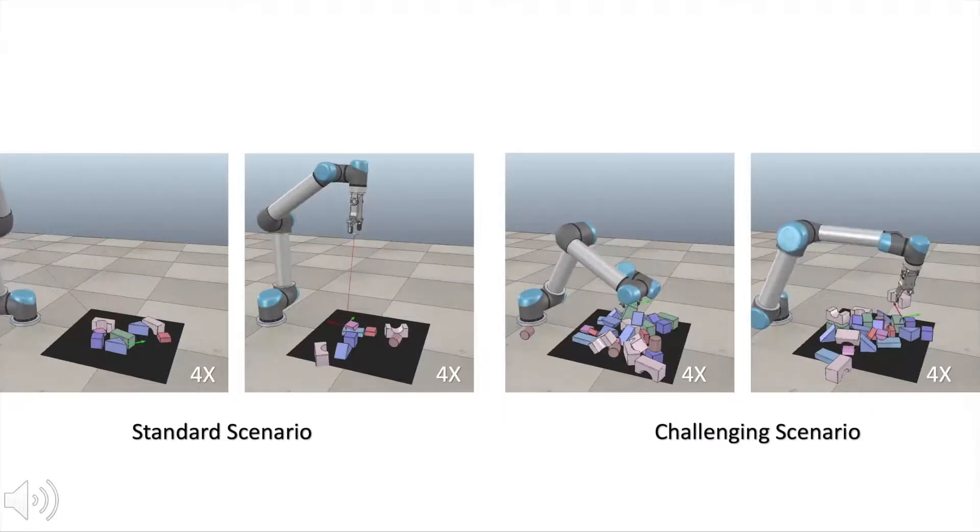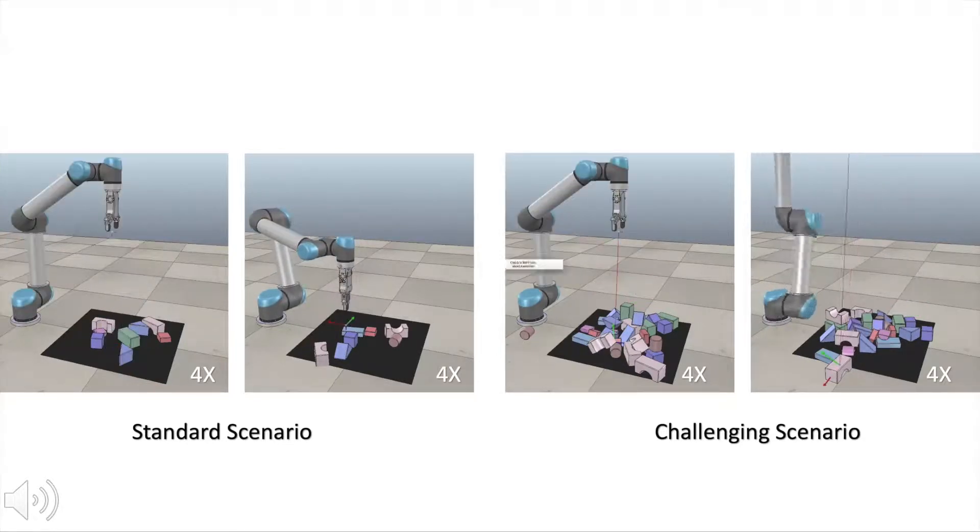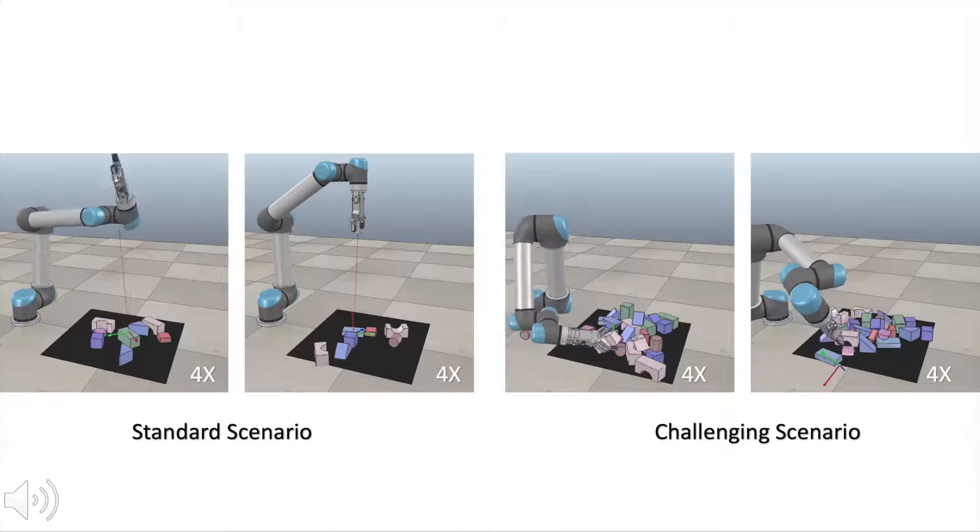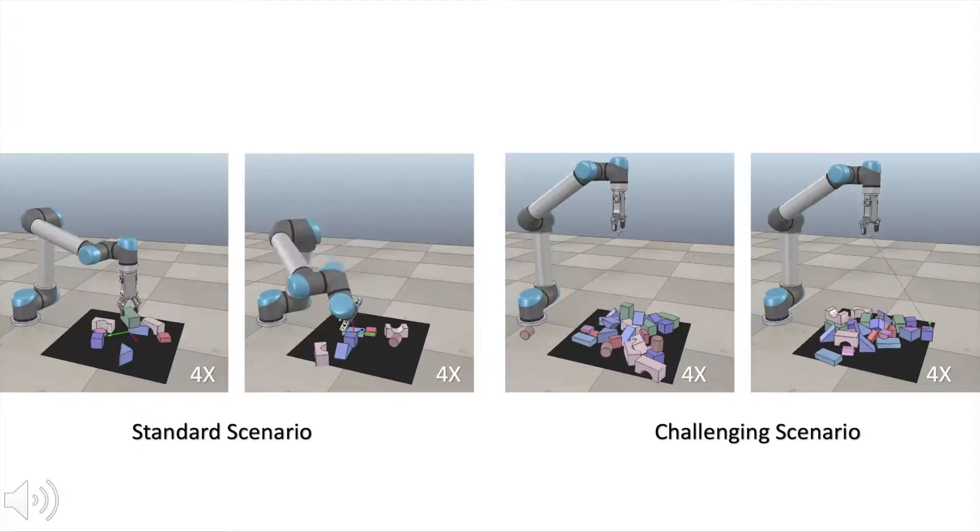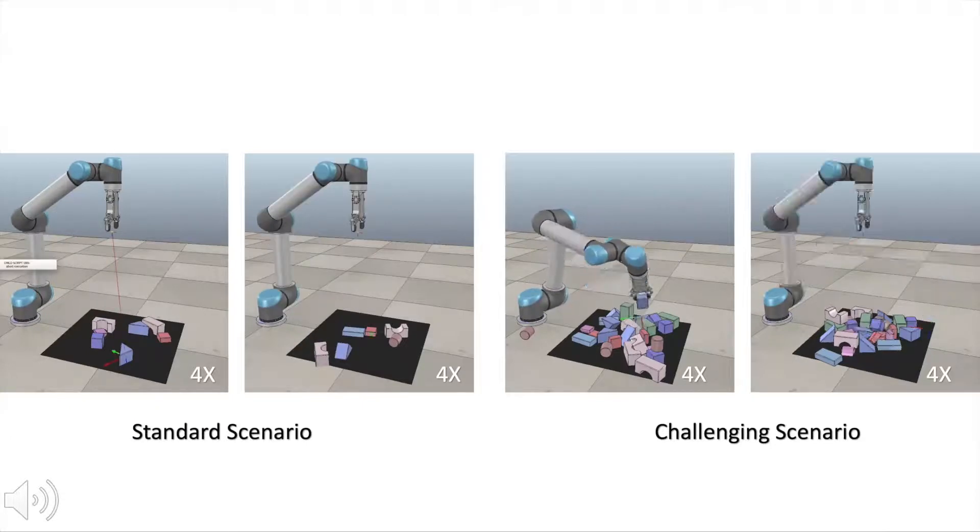The 3D CNN learns to choose more isolated objects, such as those on the top or periphery. The reachability predictor effectively rules out unreachable approaching directions, such as those toward the robot when the object is on the far side of the workspace.